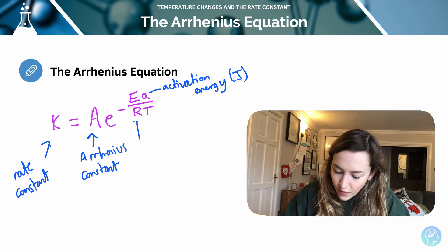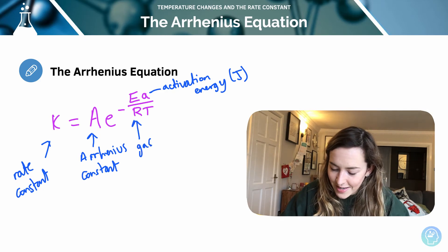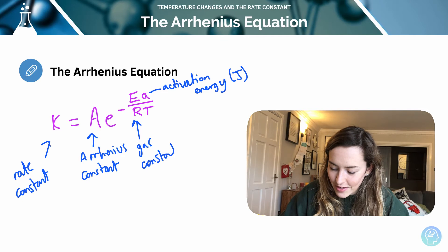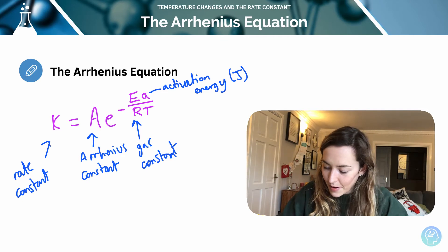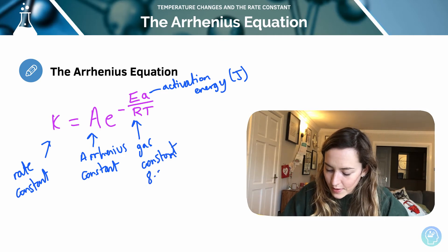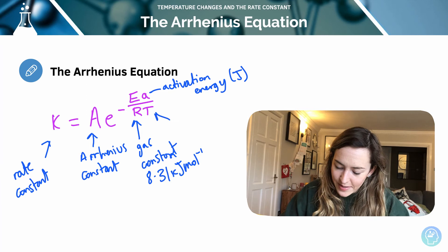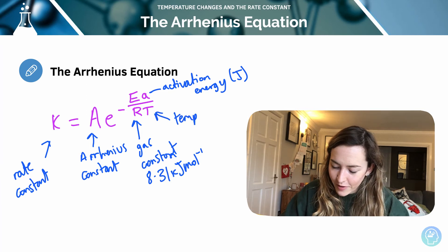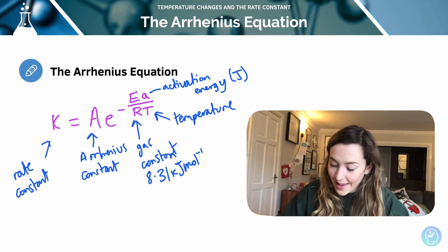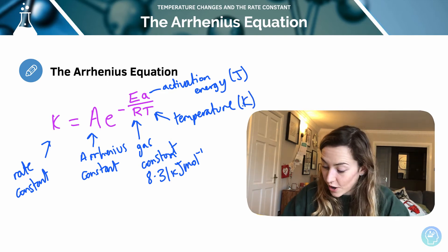And then we've got a value for r, which is another constant, it is a gas constant. So that's going to be a number, and it is 8.31 joules per Kelvin per mole. And finally, we've got T. Unsurprisingly, as usual, it is temperature. And I'm sure you're not surprised to hear that temperature has to be in Kelvin, of course. We need to do a conversion there.